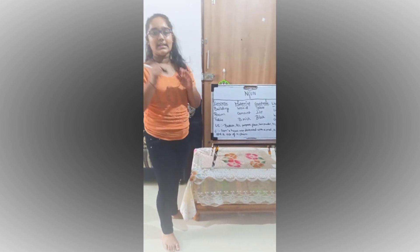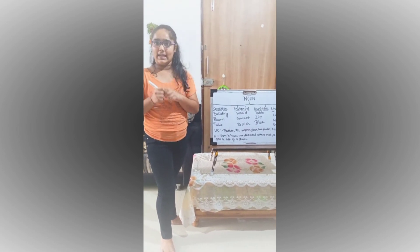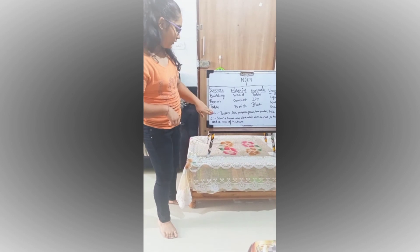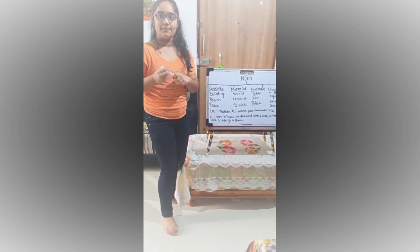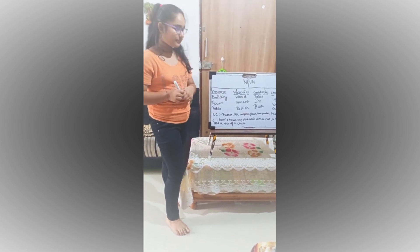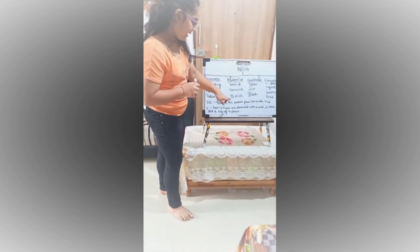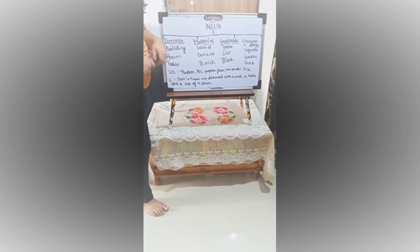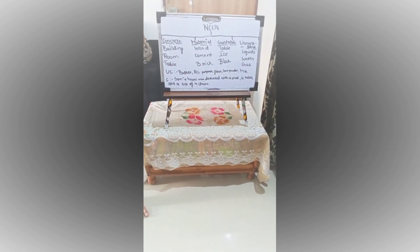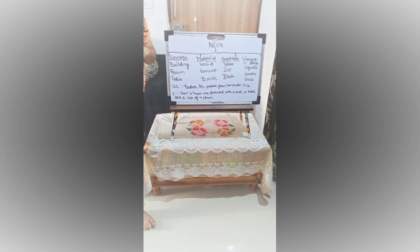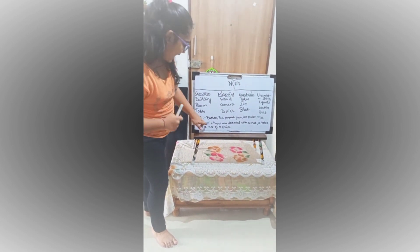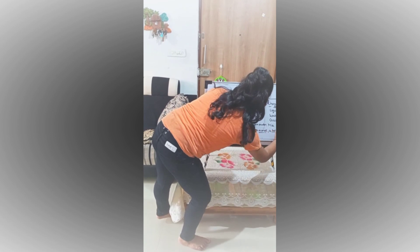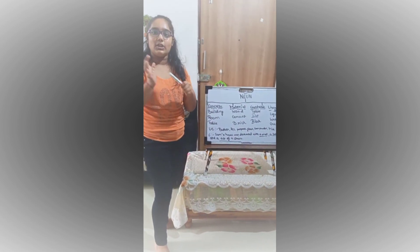To understand countable and uncountable nouns more clearly, let's take an example of baking a cake. For baking a cake, we need butter, all-purpose flour, cocoa powder and some milk — all uncountable nouns. But we can add quantifiers: 200 grams of butter, 400 grams of all-purpose flour, 2 tablespoons of cocoa powder, and half a liter of milk. By adding these quantifiers we change the uncountable nouns into countable nouns. For countable nouns: Sam's house was decorated with a mat, a table and a set of 4 chairs — all of these are countable nouns because we can count them.